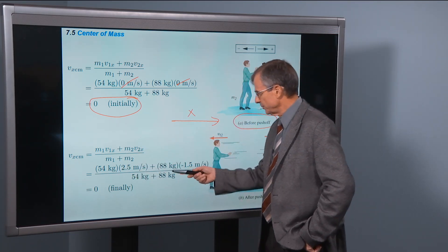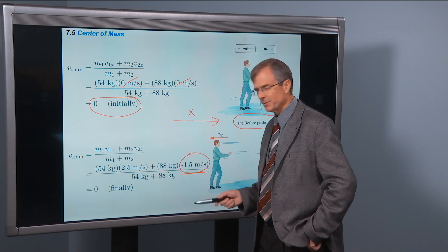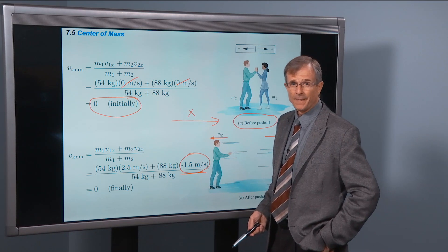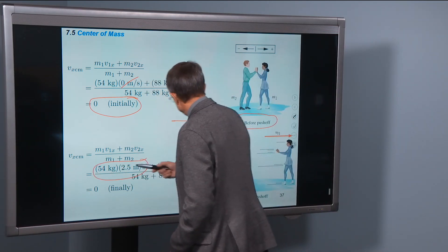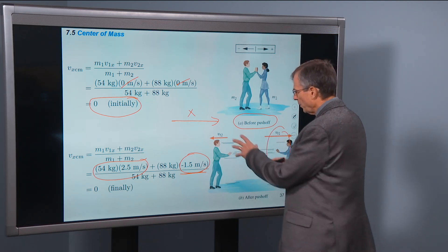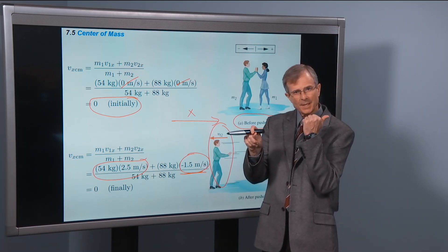And these two terms, check it yourself - you might want to use a few more significant figures than what I have here - these two terms exactly cancel each other. The momentum of the woman is toward the right, and the momentum of the man is toward the left. And those two momentums cancel each other.